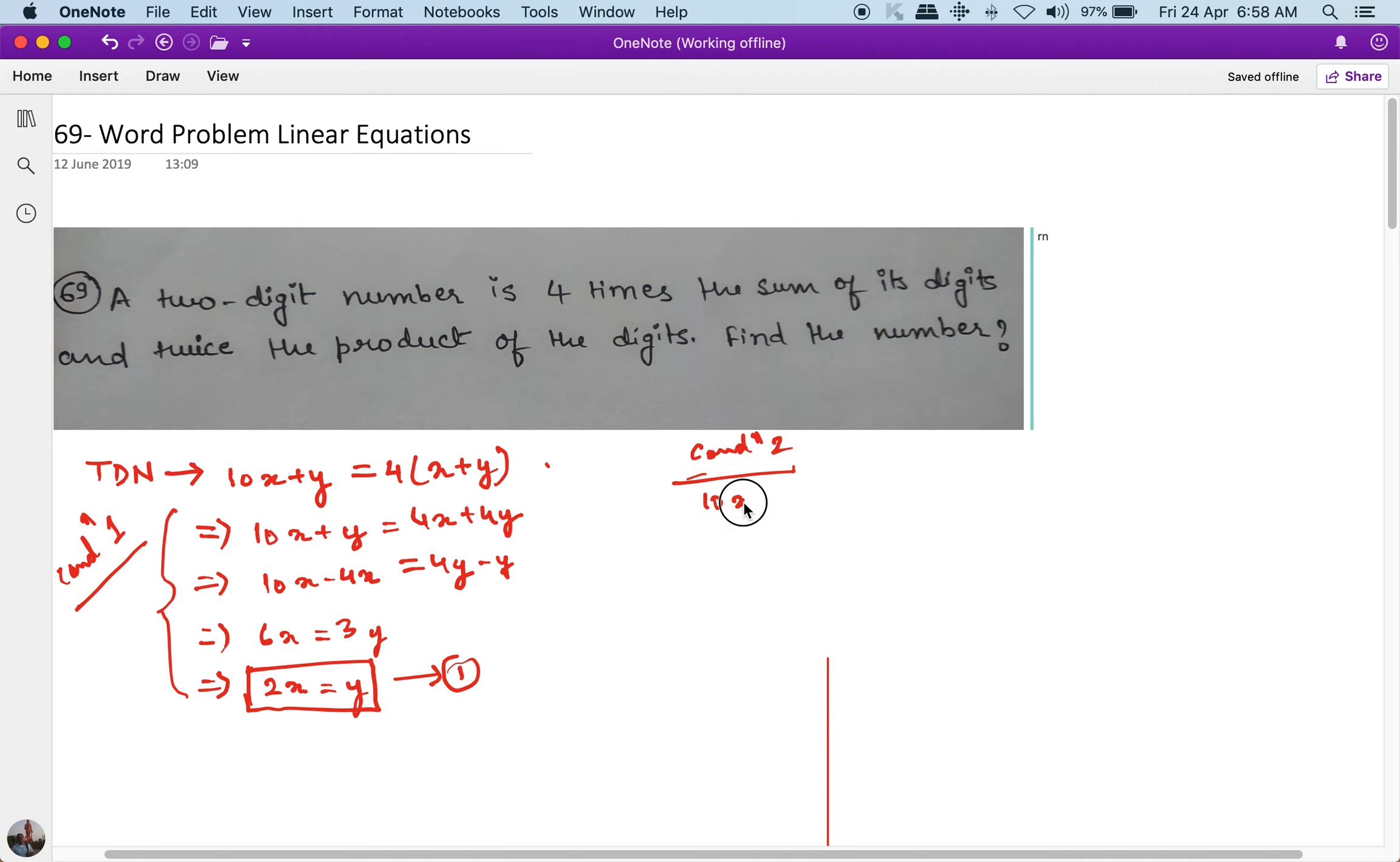Now the second condition, which is condition 2, is that the two digit number which is again 10x plus y is actually equal to twice the product of the digits, 2 times x multiplied by y. Now this is the second condition. Let me solve this part now.